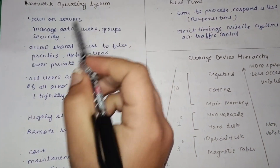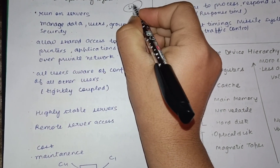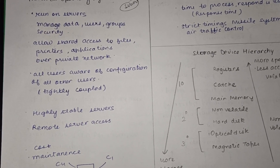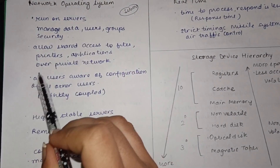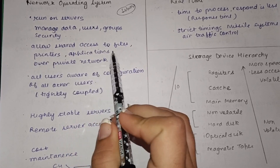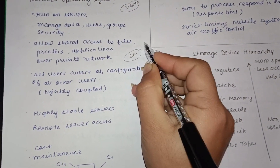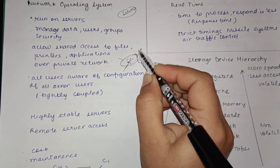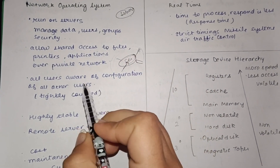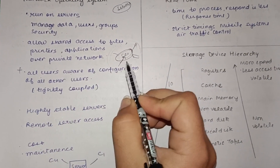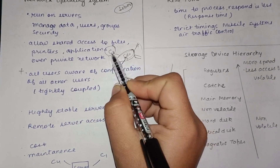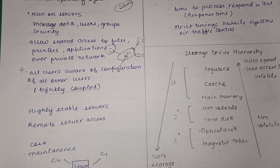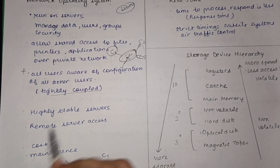The network operating system is used in servers, which must manage large amounts of data and resources efficiently. It allows shared access to files, printers, and applications over a private network. A server sits at the center, and many users are connected to it, enabling shared access to files and application programs across devices. Users are aware of both their own system configuration and the configuration of other devices, which is why these are called tightly coupled devices.